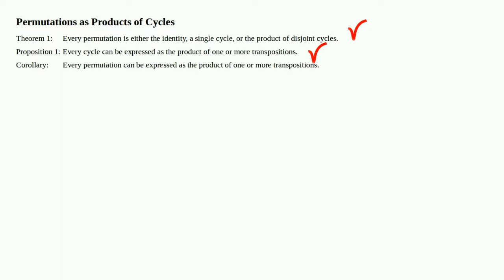This differs from the first two results. Theorem 1 says that every permutation is either the identity, a single cycle, or a product of disjoint cycles — it talks about permutations being written as cycles. Proposition 1 talks about cycles being expressed as transpositions. So we're really just connecting those two to arrive at this corollary: every permutation can be expressed as the product of one or more transpositions.